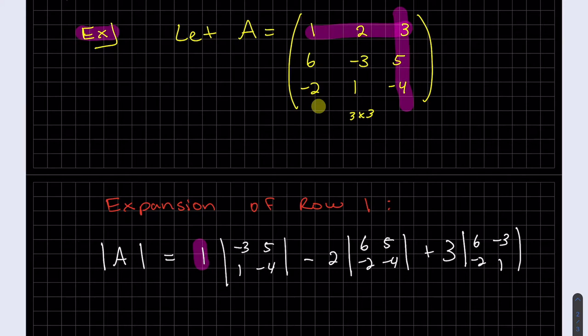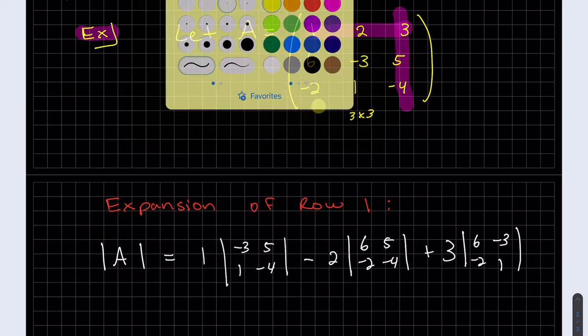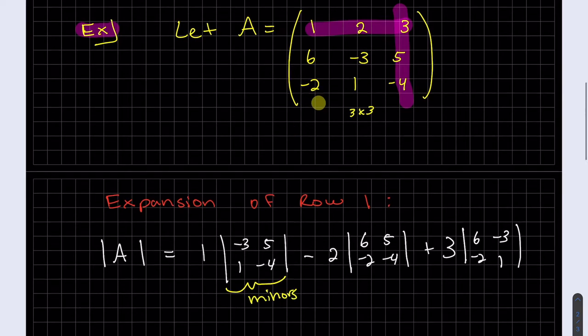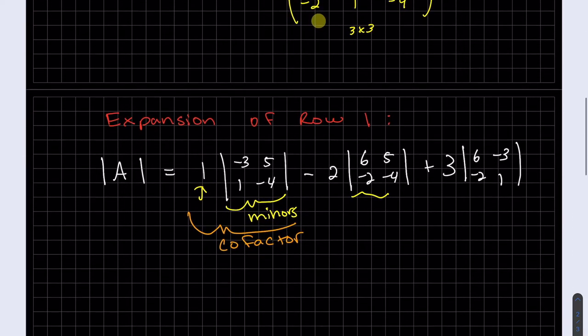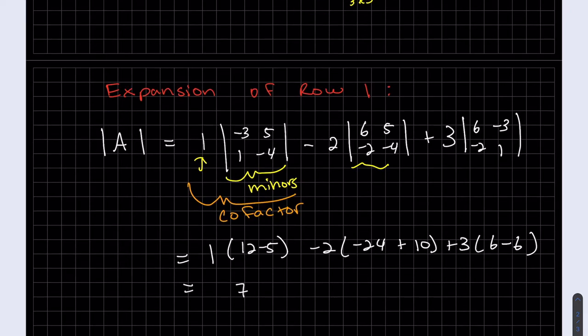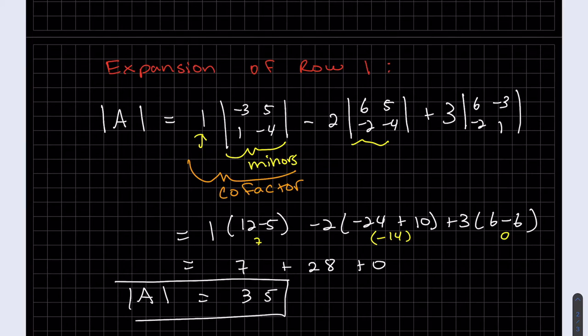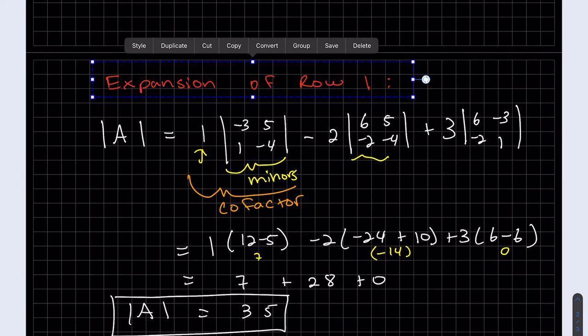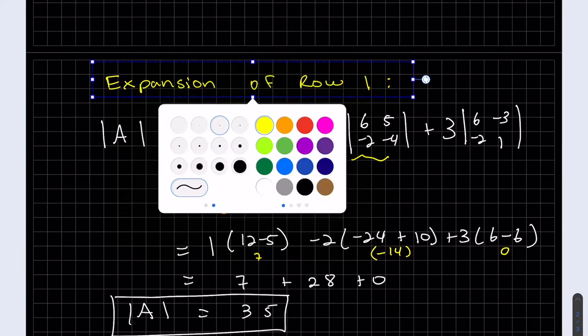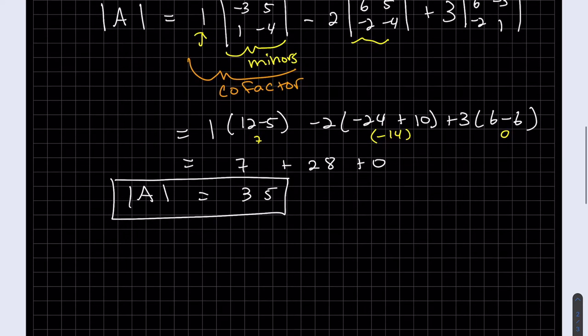And just so we have some terminology here, I've been using it already. But these are the minors. You block off that row and column of that one. And the whole thing is the cofactor. So we have three cofactors there because it's expanding across row one. So let's go ahead and calculate this. So the determinant of A is 35. This isn't the only way that we can find the determinant. This was an expansion of row one to find the determinant. We are allowed to expand along any row or any column.